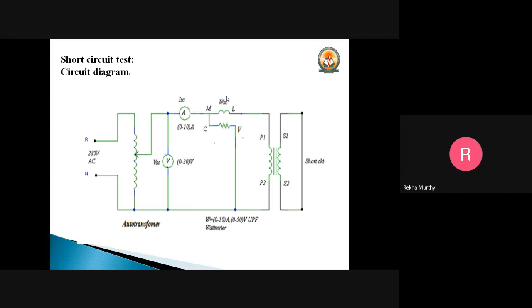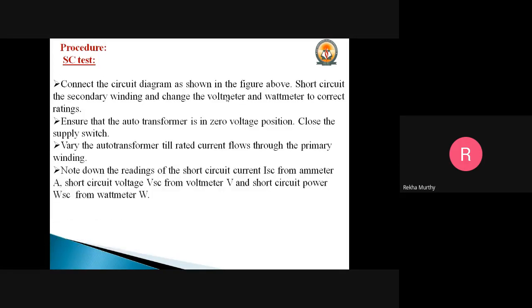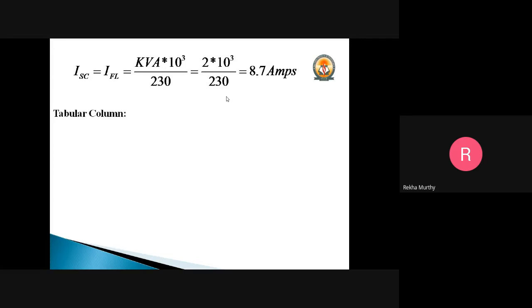The rated current is determined by the formula KVA = V × I / 1000. Applying this to find the current ISC: KVA × 10³ divided by 230 volts leads to 8.7 amperes. So we have to apply 8.7 amperes as the rated current during the short circuit test.